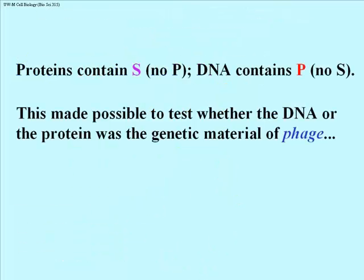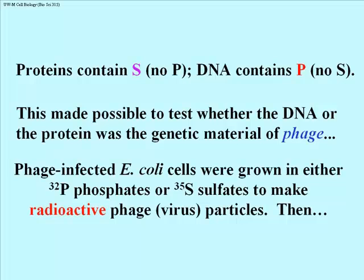It was known at the time that Alfred Hershey and Martha Chase began their experiments that proteins contain sulfur but no phosphorus, while DNA contains phosphorus but no sulfur. This made it possible, along with the availability of radioactive sulfur and phosphorus, to test which component of the phage — the DNA or the protein — was the genetic material. What Hershey and Chase did was infect E. coli cells with bacteriophage T2 and allow growth in either the presence of radioactive P-32 phosphate or S-35 sulfate, producing radioactively labeled phage particles — either with P-32 labeled DNA or S-35 labeled coat proteins.